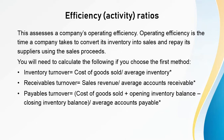You can estimate operating efficiency by calculating the length of the cash conversion cycle or the number of cycles completed in a year. For the first method, you will need: inventory turnover = cost of goods sold / average inventory; receivables turnover = sales revenue / average accounts receivable; and payables turnover = (cost of goods sold + opening inventory balance − closing inventory balance) / average accounts payable. These ratios calculate efficiency at various stages of the cash conversion cycle.